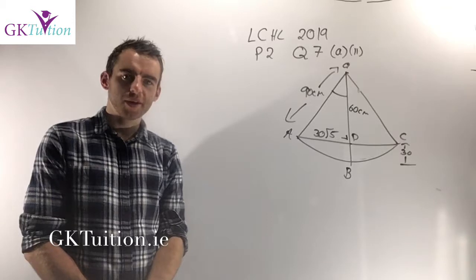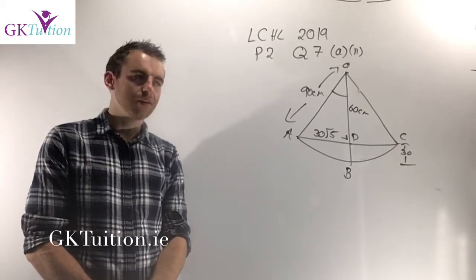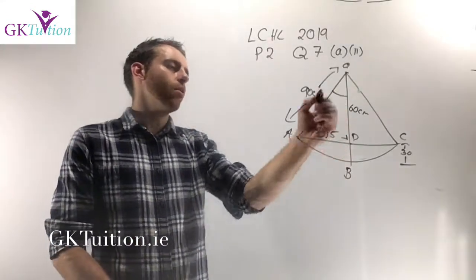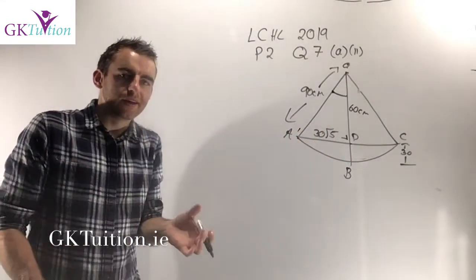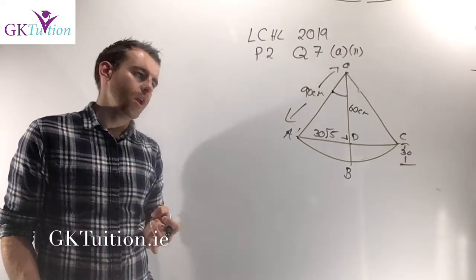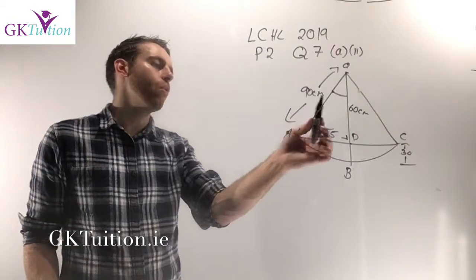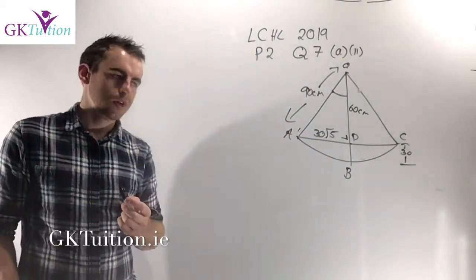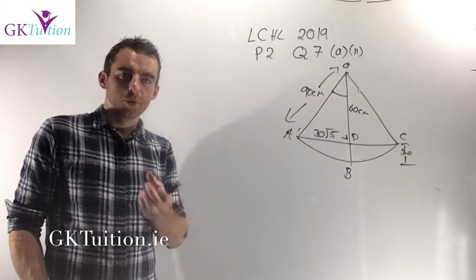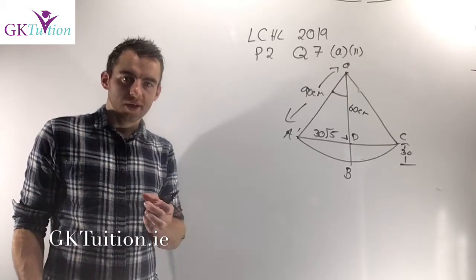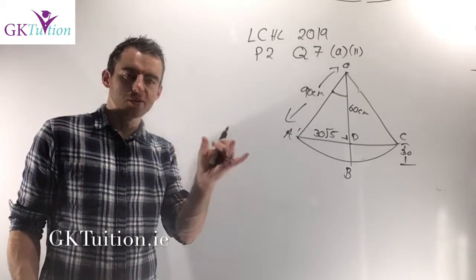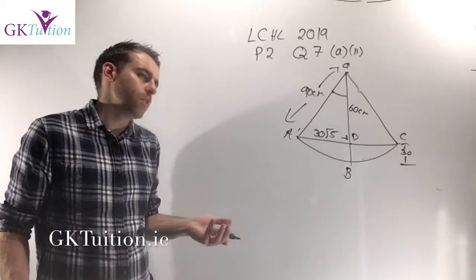In the second part of this question we're asked to find the angle DOA in radians. Looking at triangle OAD, we now have a right-angle triangle and we know all three sides. Although we could use the cosine rule, because it's a right-angle triangle it's far easier to use standard trigonometry — sine, cos, or tan ratios.